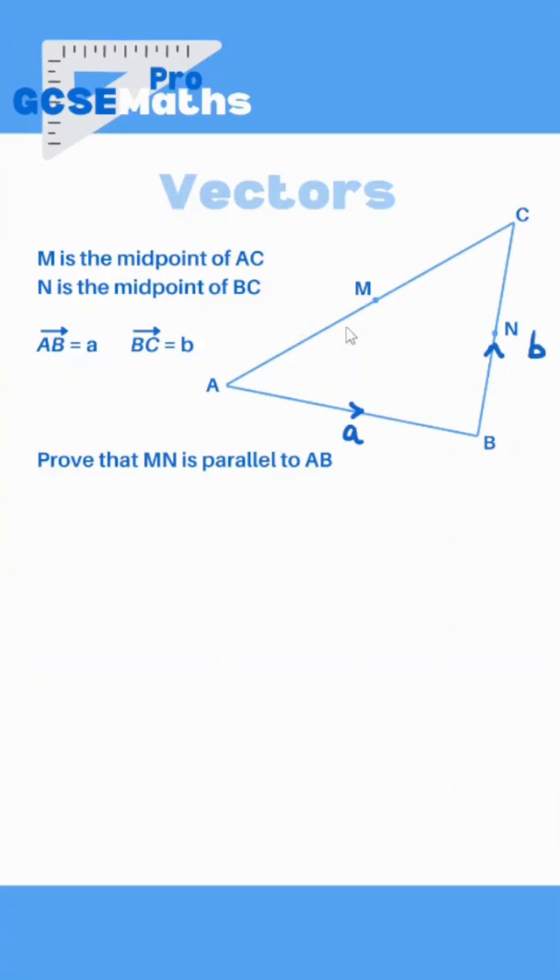So first of all we actually have to work out MN because we know AB already. So let's draw a line there first and direction. To work out MN I am going to go up to C down to N. That means I need to know AC.